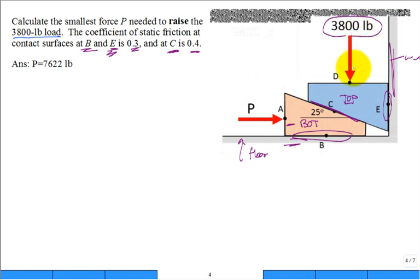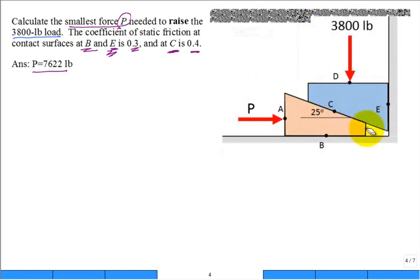You want to calculate the minimum, the smallest force P needed to actually raise the load. The minimum answer is 7,622 pounds. So how are we going to estimate and solve for the minimum P?